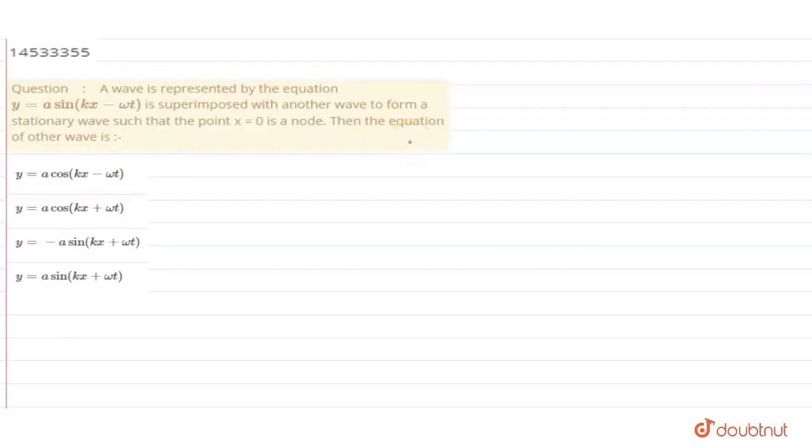What is the question? The wave is represented by y = a sin(kx - ωt). This is superimposed with another wave to form a stationary wave, such that the point x = 0 is a node. Then, what will be the equation of this other wave?